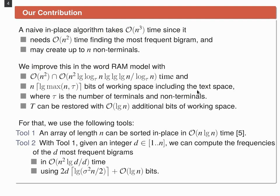And here we want to improve on this solution and we came up with an algorithm that works either in n squared or in n squared times something for broadword techniques time. And our space limit is n times log max n and tau bits, including the text space, where tau is the number of terminals and non-terminals. And we can restore the text with additional order log n bits.